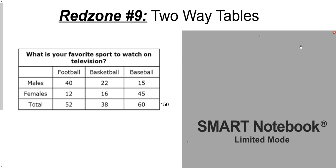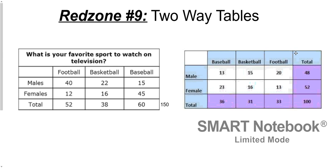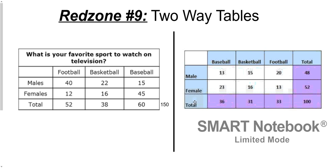Here's another two-way table with the same question — they just switched the order. Instead of football, basketball, baseball, they went baseball, basketball, football, but it's the same exact thing. You can see they gave us all the totals already. So how many total people were in this survey? The answer is 100, because where total and total meet, it says 100. So 100 people were surveyed here.